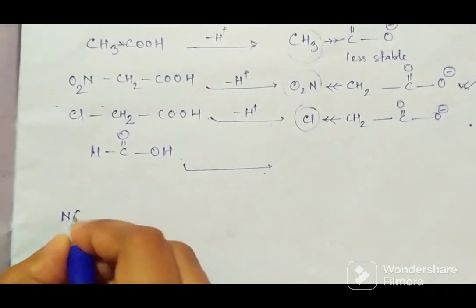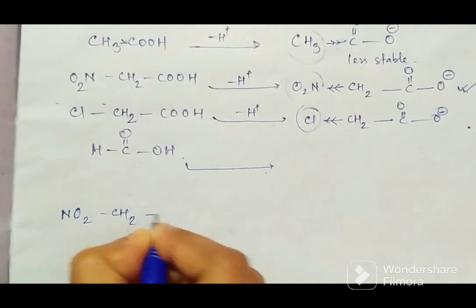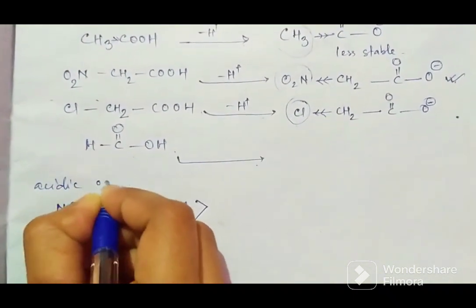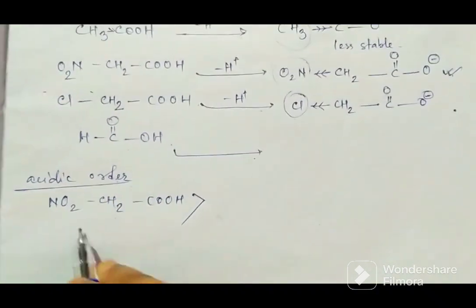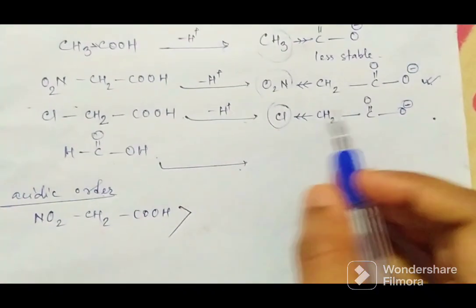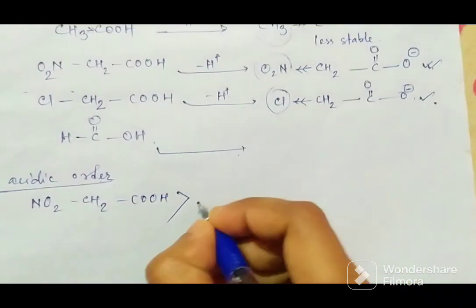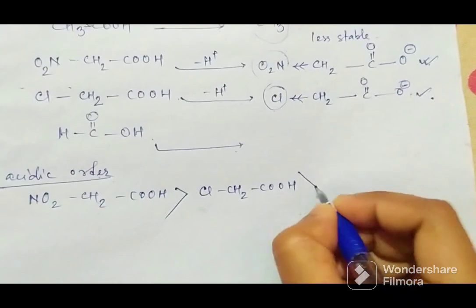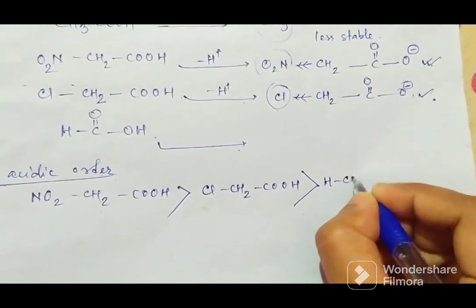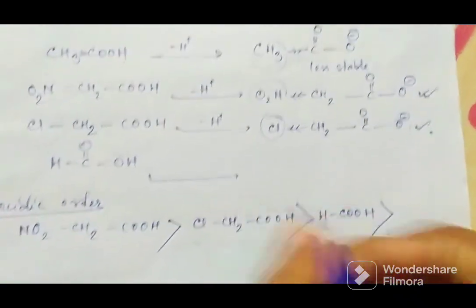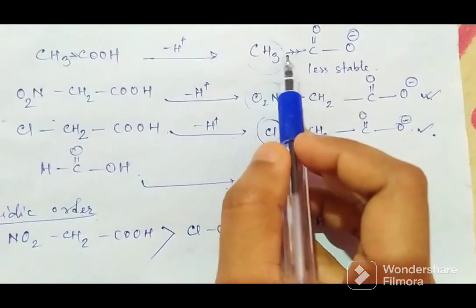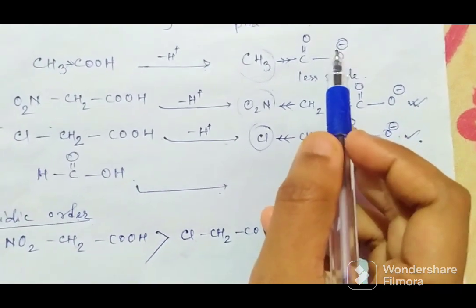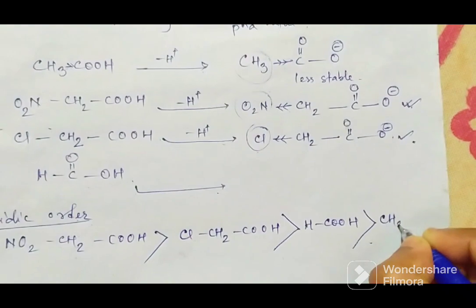Okay, here I am writing the acidic order. I am not writing the pKa order, I am writing the acidic order. Nitroacetic acid is the more acidic, then comes chloroacetic acid, next comes formic acid, and then comes acetic acid because it has plus I effect. It is pushing electrons, so the electron density will increase, so this is more unstable. So here, less acidic.